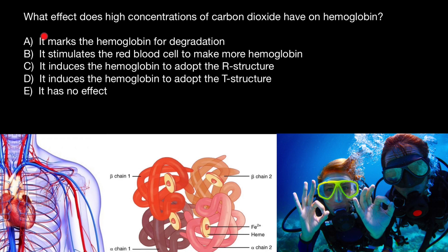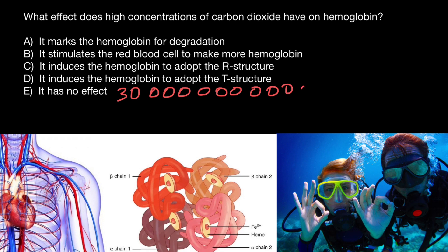Let's read variant A: it marks the hemoglobin for degradation. To evaluate this, let me explain how many cells we have in our organism — it is 30 trillion. Let me write down this number: 30 million of millions, three more zeros, which gives us 30 trillion.